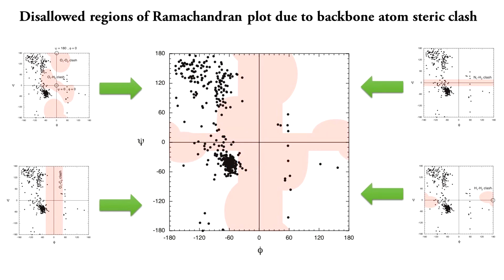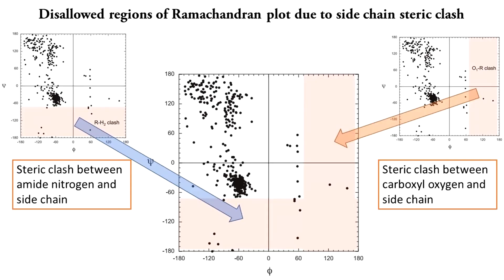So, how much more region is forbidden due to the side chains? From the previous discussion, we have understood that there will be two steric clashes due to the side chain: the first clash is between the amide group hydrogen and the side chain, and the second clash is between the carboxyl group oxygen and the side chain. Obviously, the extent of this interaction and the respective disallowed regions in the Ramachandran plot could be different for different amino acids with different sizes of side chains. But on an average, the general forbidden regions are highlighted here.